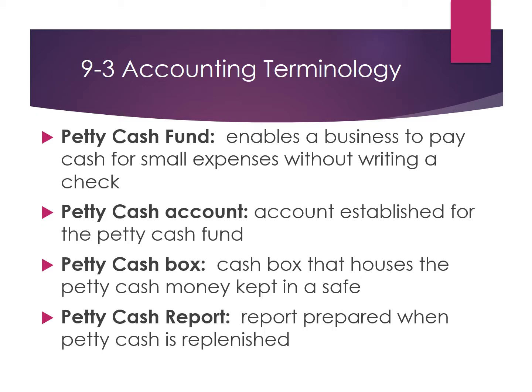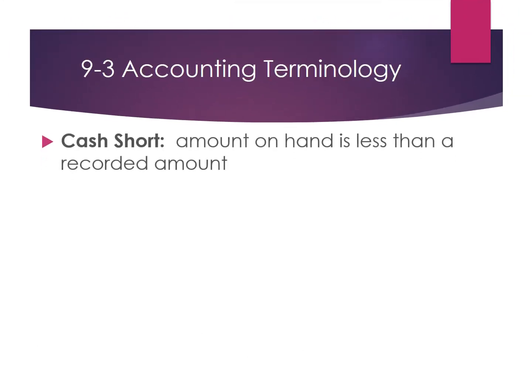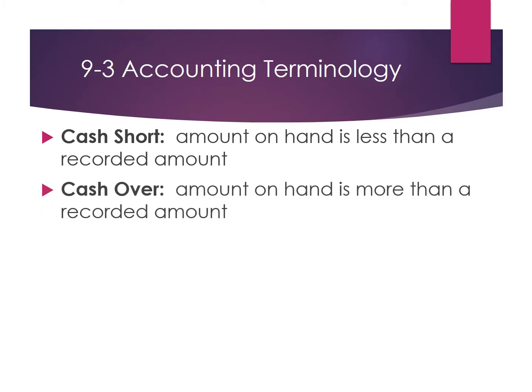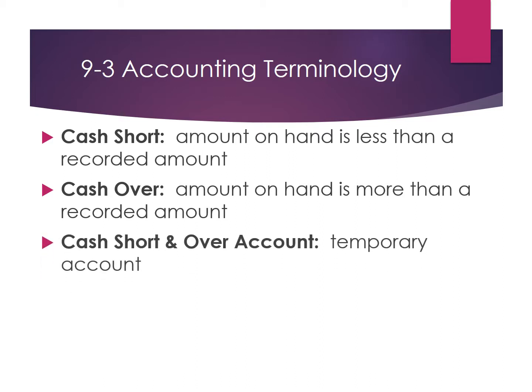Petty Cash Report: the petty cash report is prepared whenever we replenish petty cash. Cash Short: the amount on hand is less than the recorded amount. Cash Short and Over Account: this is the account that is used whenever cash is short in petty cash or cash is over in petty cash. The Cash Short and Over Account is a temporary account.